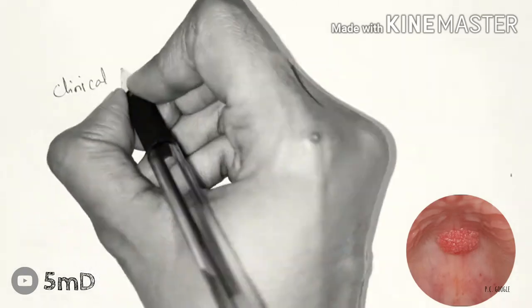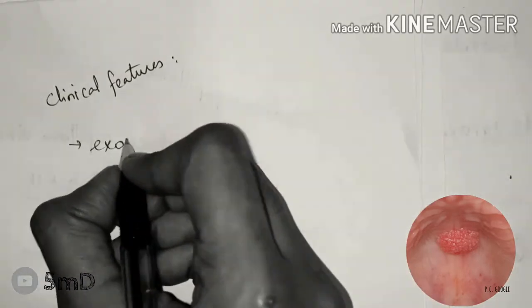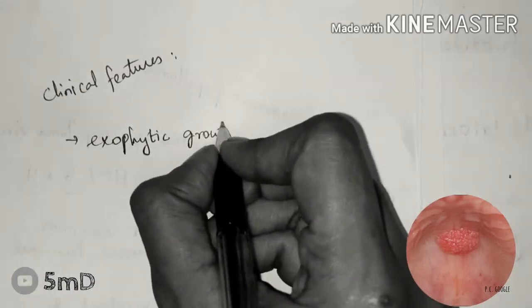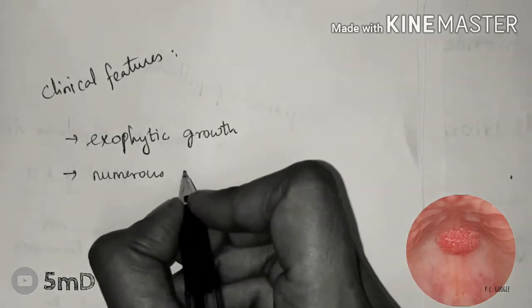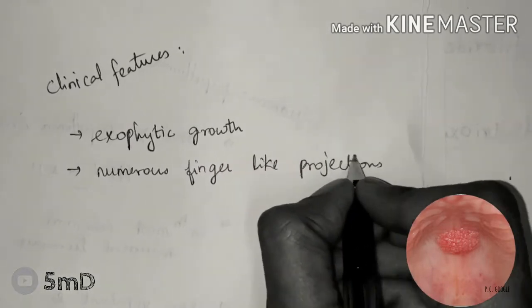Now let us see the most common clinical features of papilloma. The growth is exophytic in nature, made up of numerous finger-like projections, hence the name cauliflower-like surface.